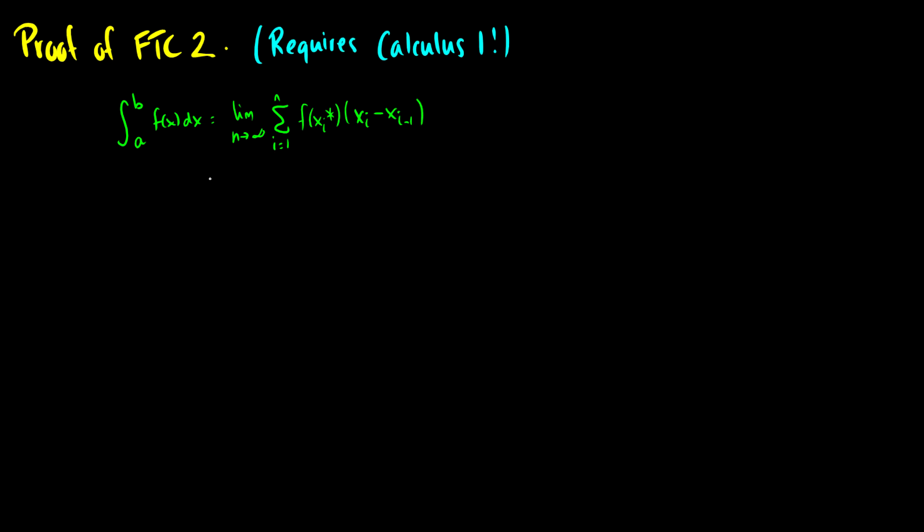And what this really is is the limit as n goes to infinity of sigma of i equals 1 to n of the derivative of some function times the difference between two points. So we're just letting f prime of x equal to f of x and we're just substituting that in there.